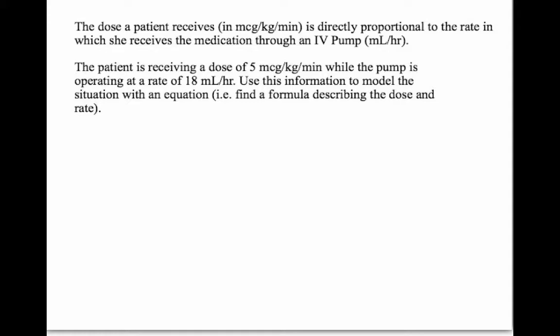What we need to do is create a model — an equation. We know that when the patient is receiving five micrograms per kilogram per minute, we can look at the pump and see it is operating at 18 milliliters per hour. Knowing they are directly proportional, and having one instance of a relationship between these two quantities, we want to find a formula between dose and rate so we can convert from the dose to the rate, or the rate to the dose.